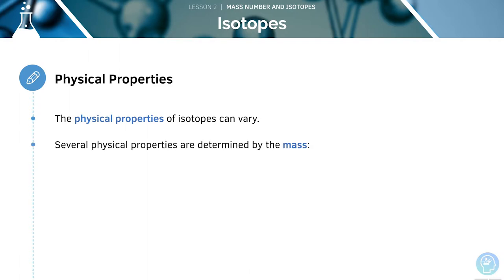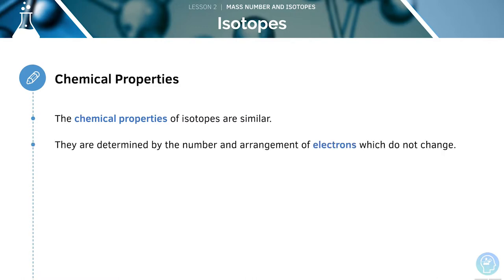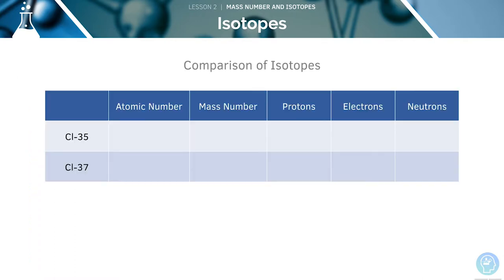The physical properties of isotopes can vary. Several physical properties are determined by mass, including density, boiling point, and melting point. The chemical properties of isotopes are pretty similar, as these are determined by the number and arrangement of electrons, which do not actually change.